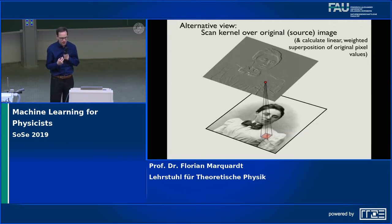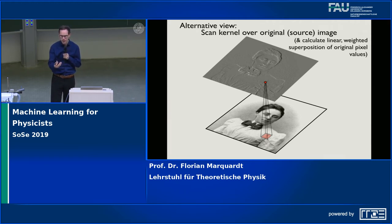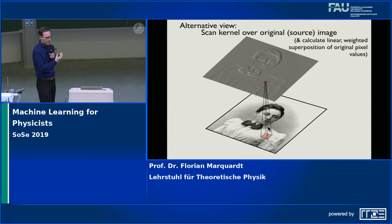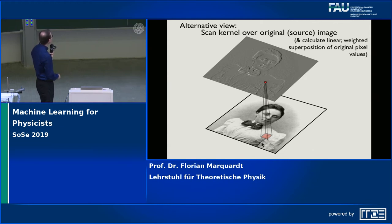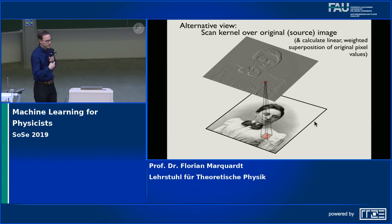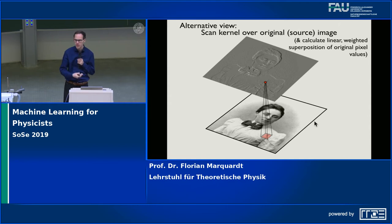There is an alternative view. I told you that any original pixel contributes new values in its vicinity. You can also say any pixel in the resulting image picks up values from its vicinity in the original image. In both cases, it's the kernel you're talking about — one case says each original pixel spreads around, the other says each target pixel picks up values from its vicinity. Either way you get the same result. Applying these filters is really just a linear weighted superposition of the original pixel values weighted by the kernel values — sometimes called kernel, sometimes called filter, it's the same thing.